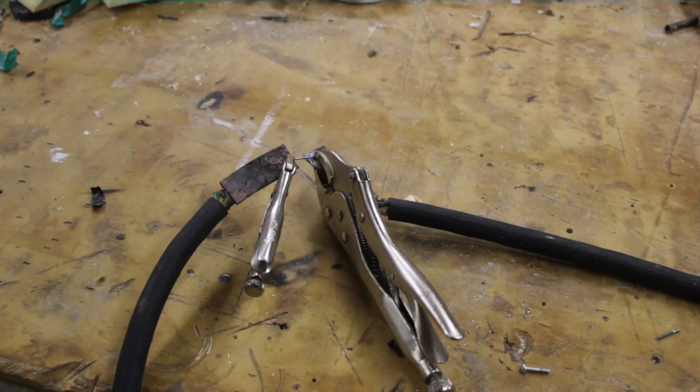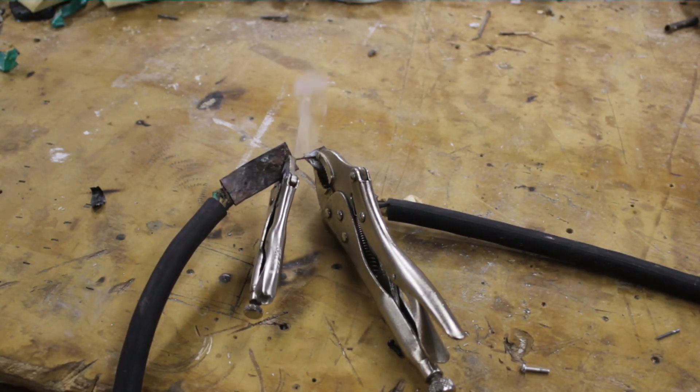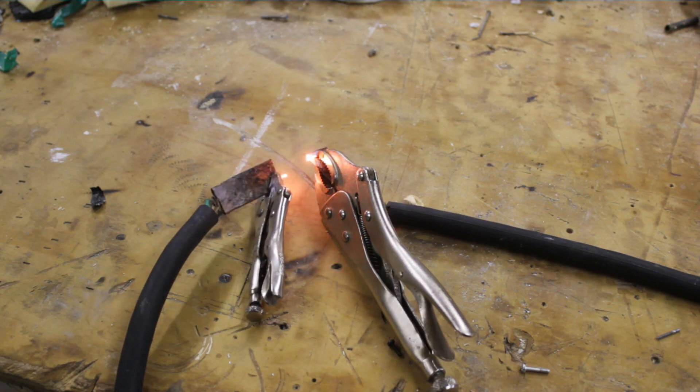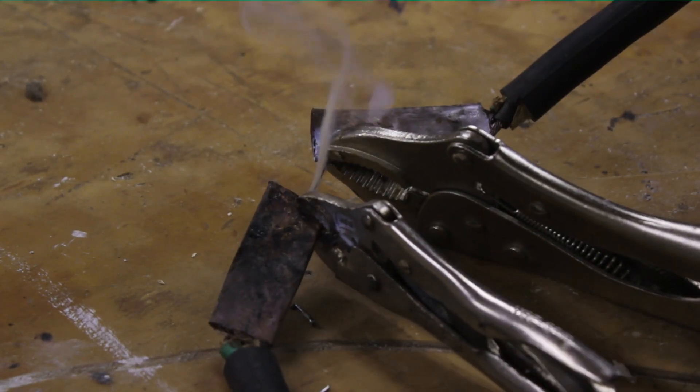So small nails like this melt almost instantly. They melt very fast, they can't handle the amps.